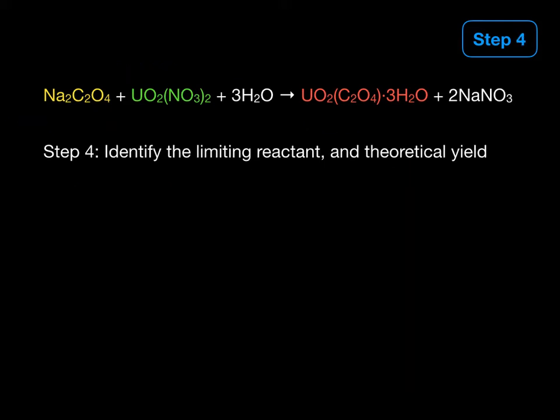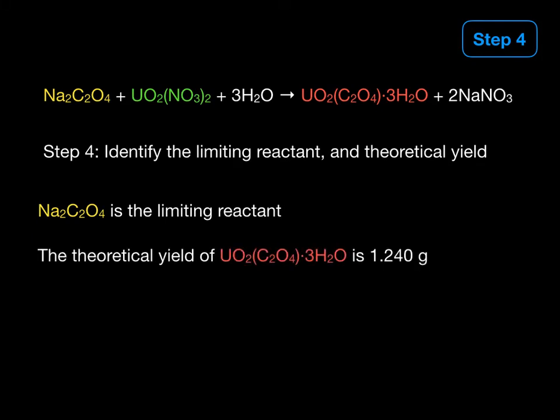Step four is to identify the limiting reactant and theoretical yield. As mentioned, sodium oxalate is the limiting reactant because it theoretically produces a smaller amount of product. We calculated the theoretical yield to be 1.240 grams of product.